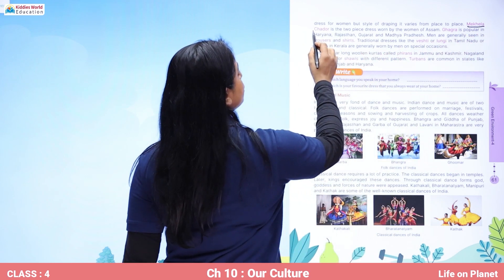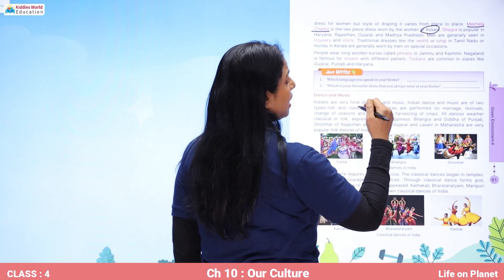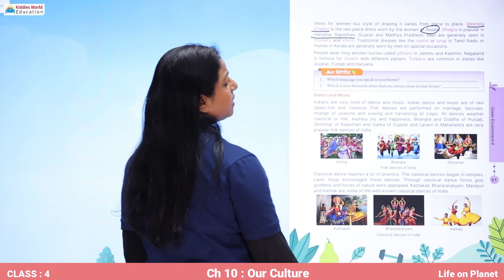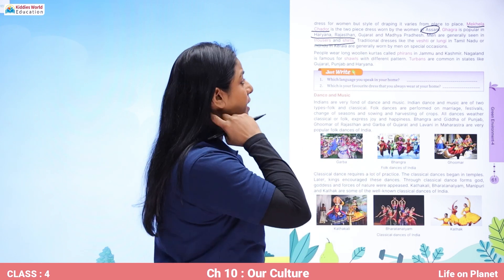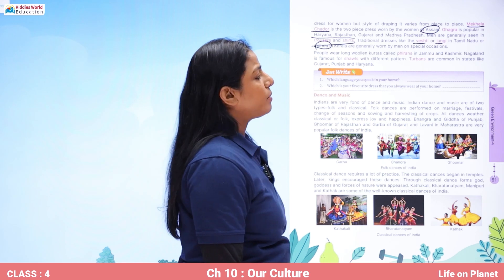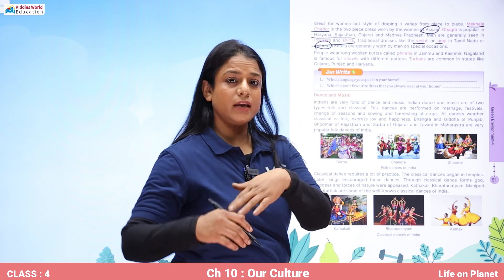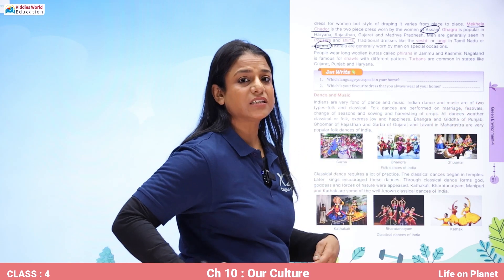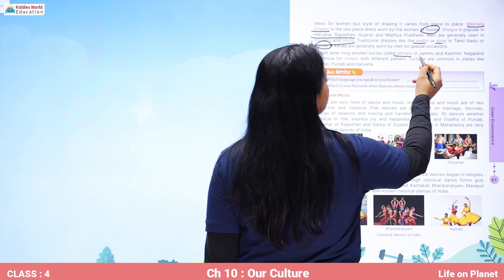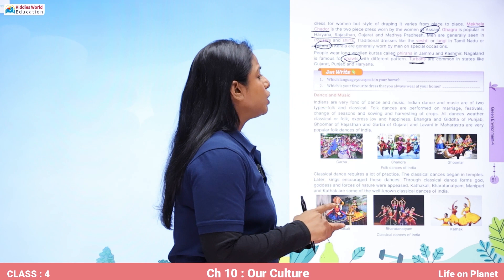Mekhela chadar is the two-piece dress worn by women of Assam. Ghagra is the most popular in Haryana, Rajasthan, Gujarat and Madhya Pradesh. Men are generally seen in trousers and shirts nowadays, but traditionally men used to wear Veshti or Lungi in Tamil Nadu, or Mundu in Kerala, generally worn on special occasions. A Lungi is a piece of cloth draped around the waist. People wear long woolen kurtas called Ferrans in Jammu and Kashmir. Nagaland is famous for shawls with different patterns, and turbans are common in Gujarat, Punjab and Haryana.